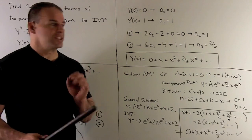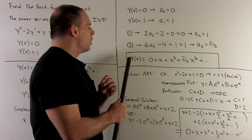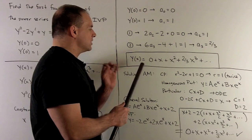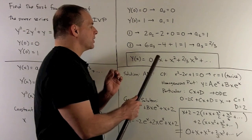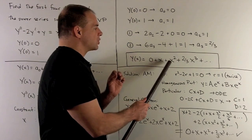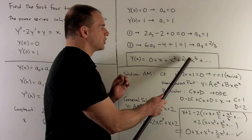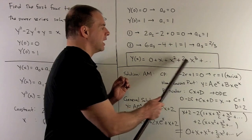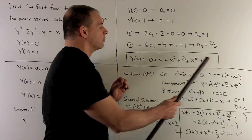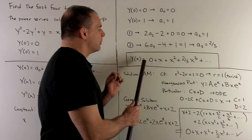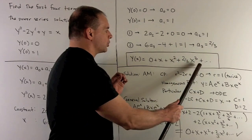So our answer is y of x equals zero plus x plus x squared plus two thirds x cubed, and so on. That gives us our first four terms.